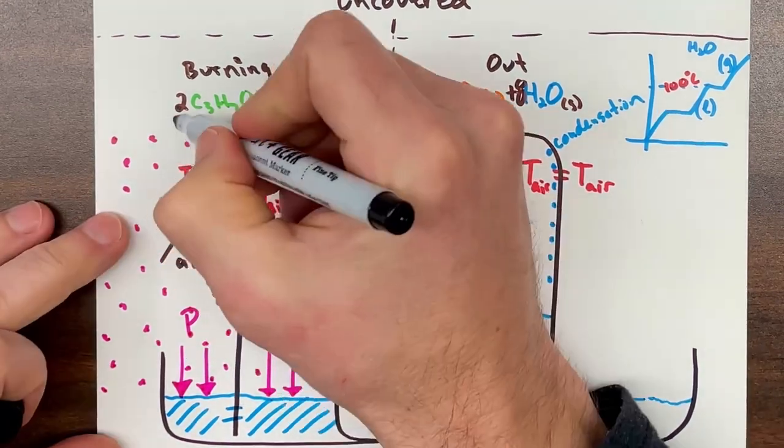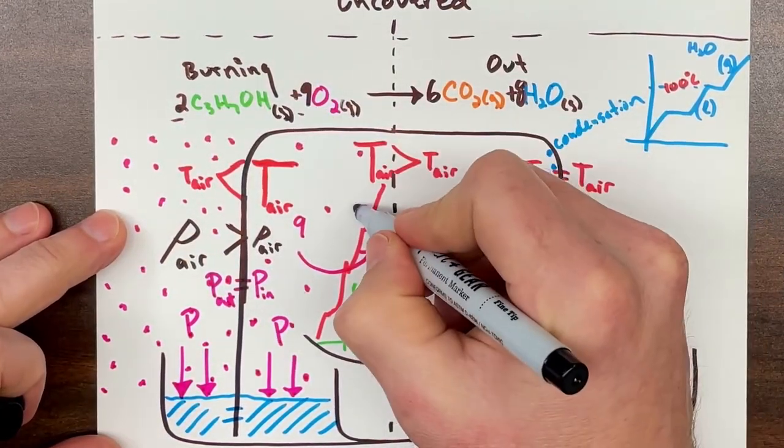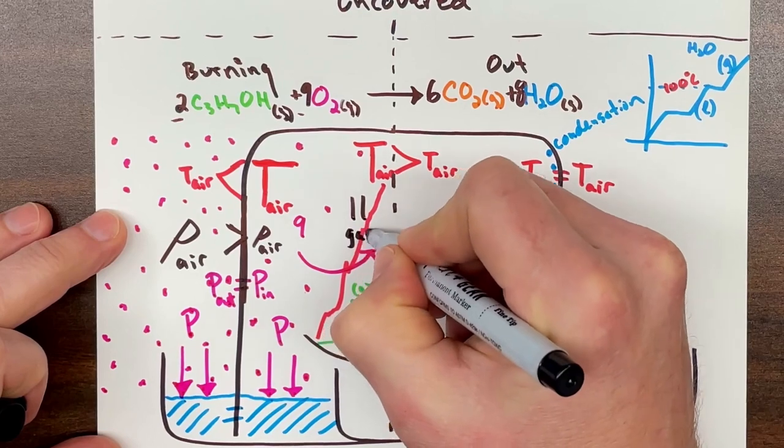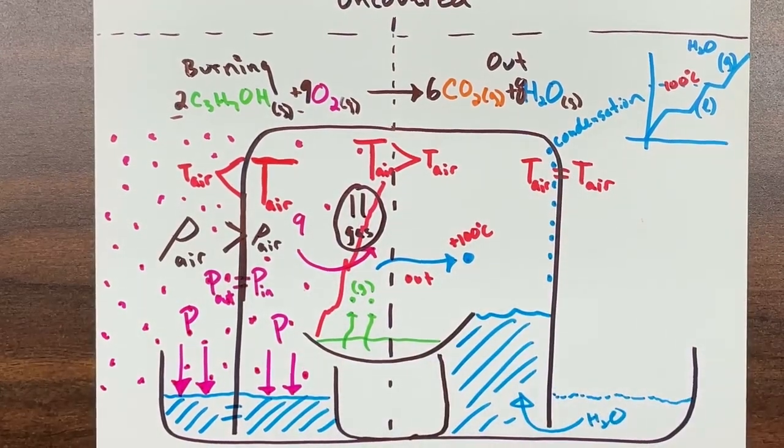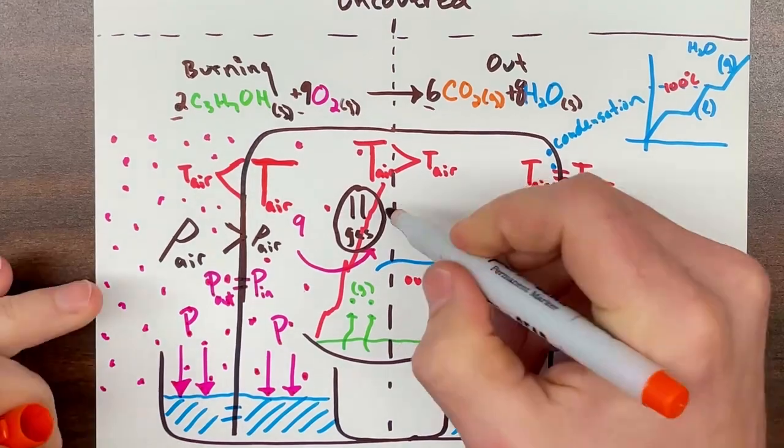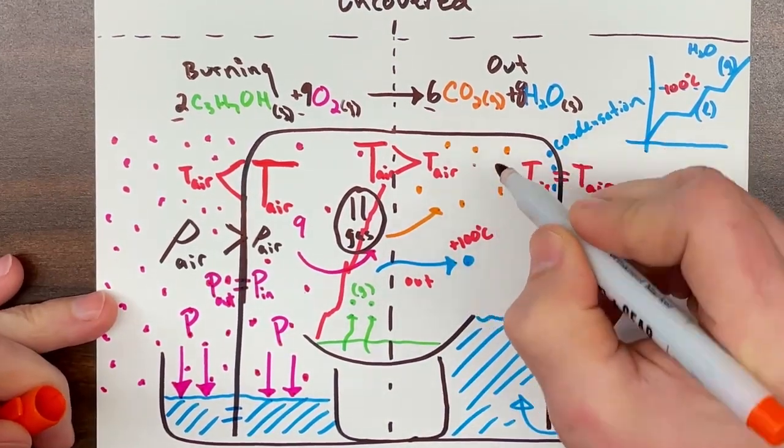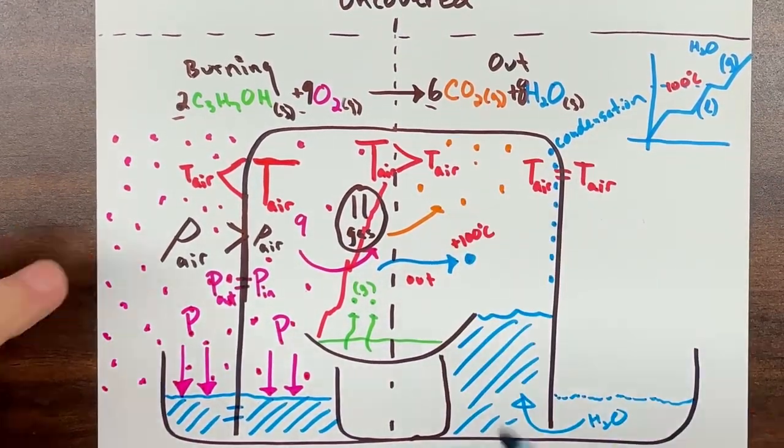For two vapor alcohols to react, they need nine oxygens to crash into. That's a total of 11 gas molecules since I'm including the alcohol. That is going to rearrange into six carbon dioxide gas molecules that are moving really fast in eight hot gaseous waters.